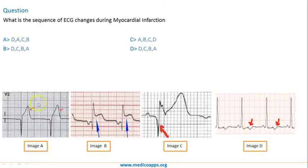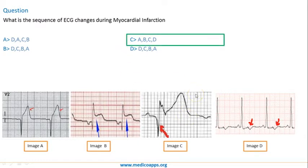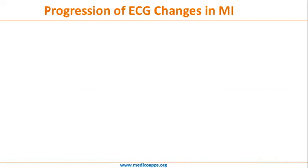From theory, we know the correct sequence is: first, hyperacute T wave; then ST segment elevation; third, the Q wave; and fourth, T wave inversion. So the correct sequence would be A, B, C, D — and the answer would be answer C: A, B, C, D. Let's understand this concept further.